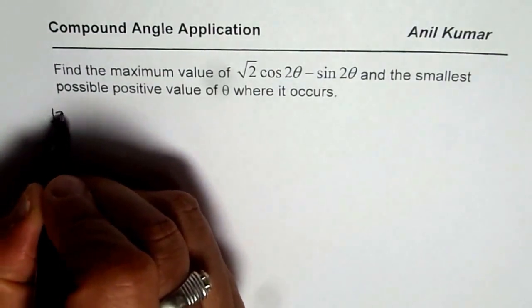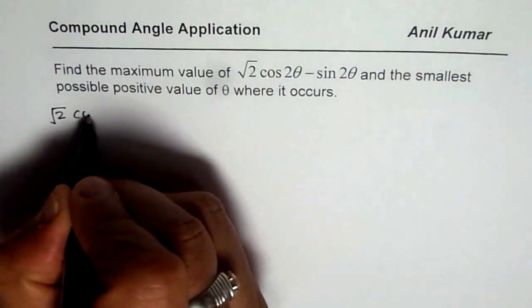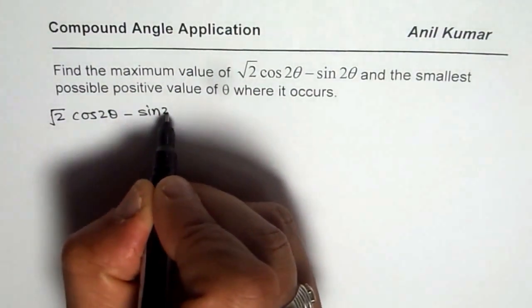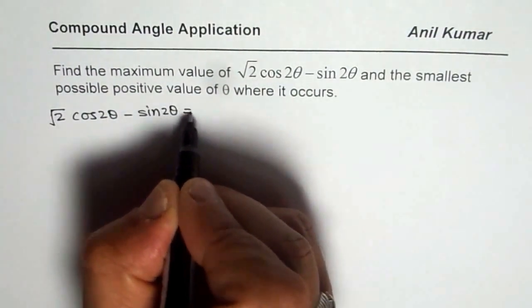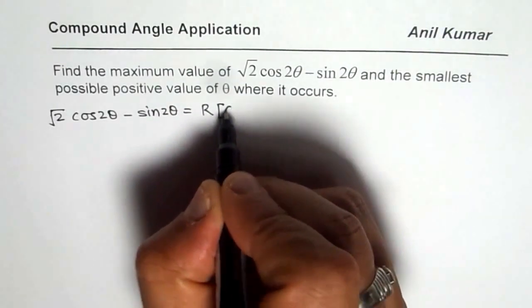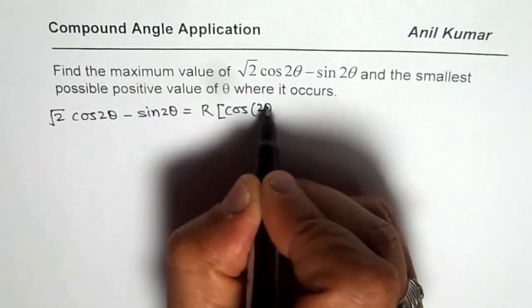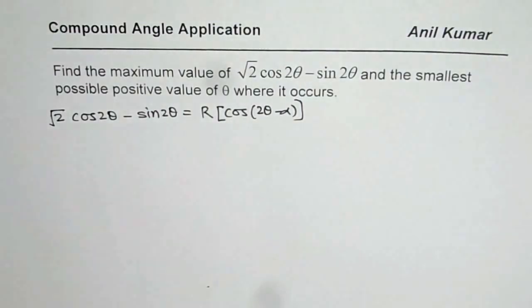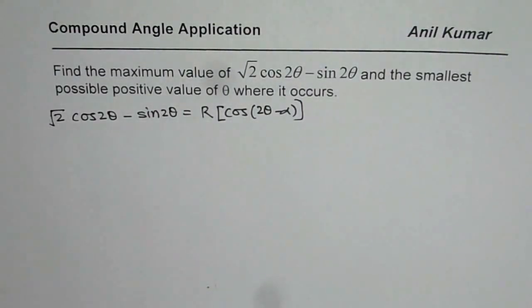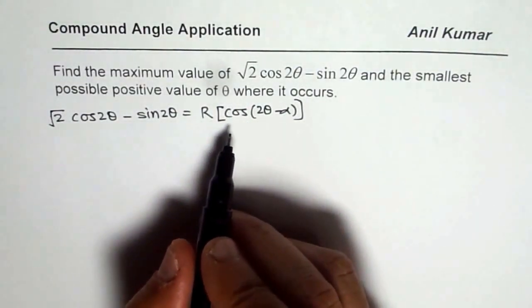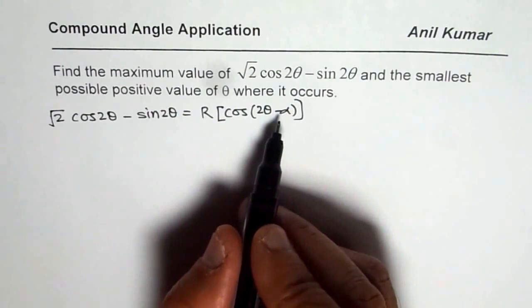So we have √2·cos(2θ) − sin(2θ). We could write this as r·cos(2θ − α) — that is, a single trigonometric ratio — and then find the maximum. This is a very good technique, so let us see how to apply it.